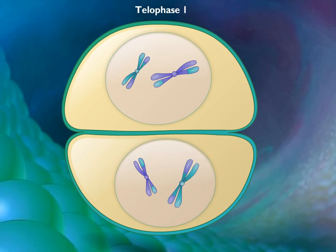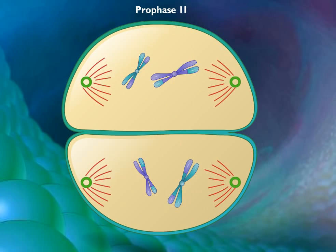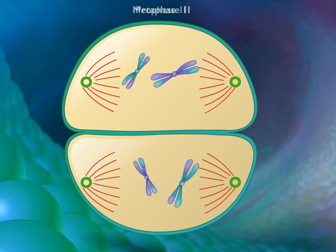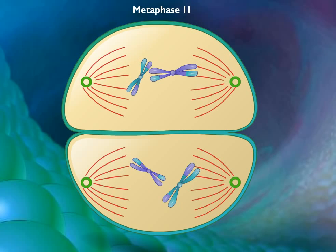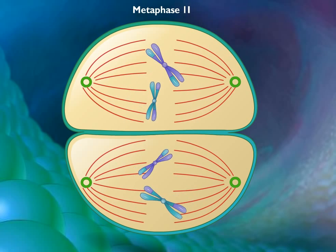During prophase II, the nuclear envelope breaks down and a new spindle forms. In metaphase II, spindle fibers bind to both sides of the centromeres.